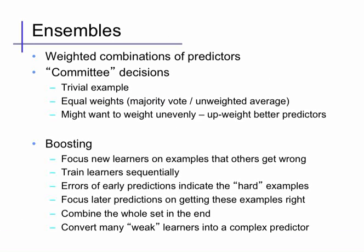An ensemble is a collection of predictors whose predictions are combined, usually by some sort of weighted average or vote, in order to provide an overall prediction that takes its guidance from the collection itself.